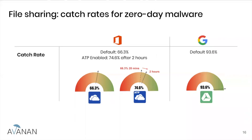For file sharing, Google also displayed the best results with 93.6% of malware caught. Because of the static layers that prevent executables in emails, you do see a big discrepancy between email and file sharing results. For Office 365, the default anti-malware caught 66.3%. When we plugged in the same malware to an Office 365 environment with ATP enabled, it caught the same as the default security within 20 minutes — but if you waited an additional two hours, it came up to 74.6%.